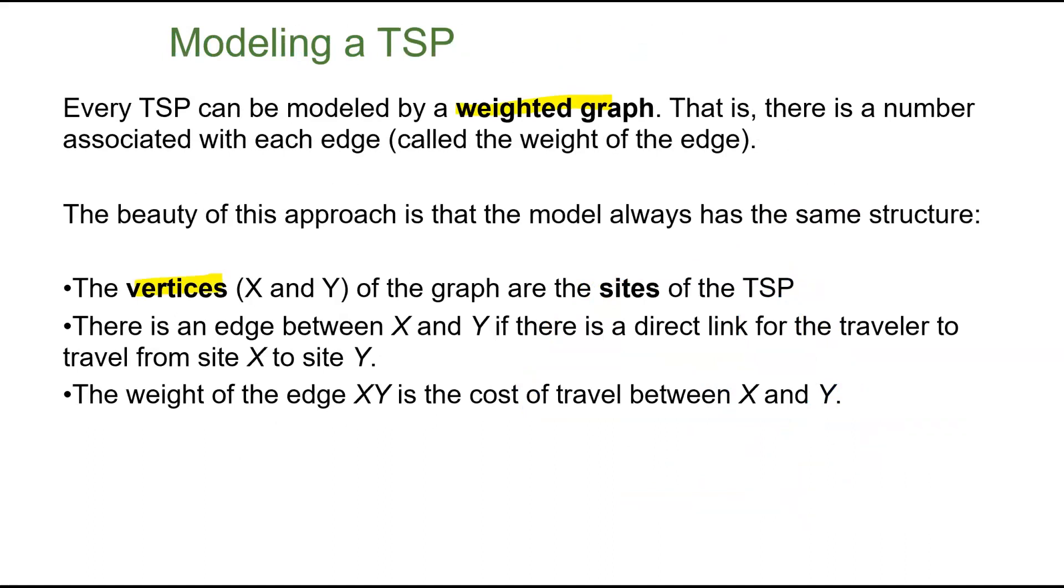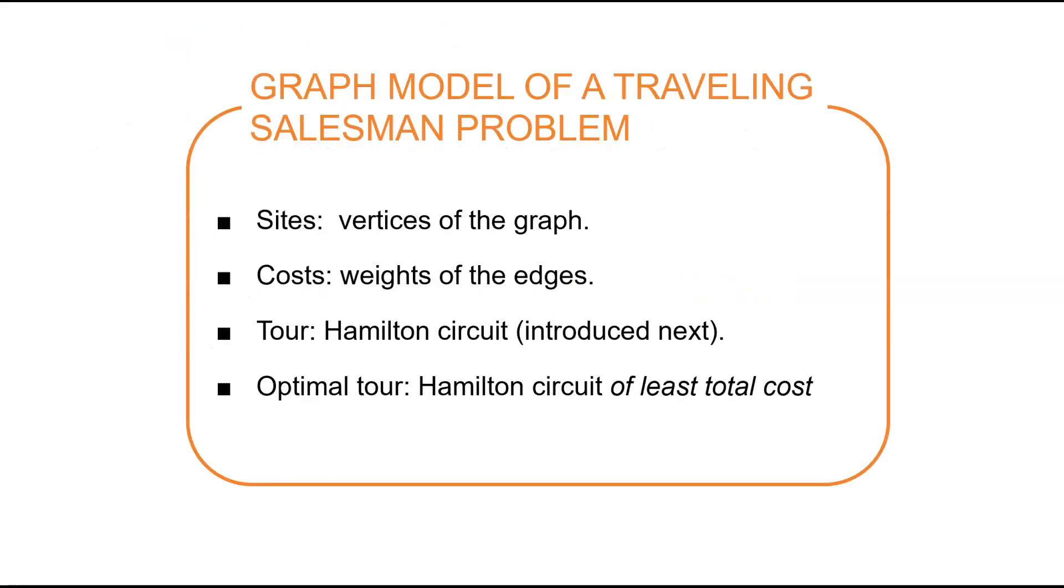And the vertices are the sites that you're visiting. So you guys are going to be making a traveling salesman problem for your project. So you're going to build a weighted graph and the vertices will be your sites. So, again, you're going to build this in your project. The sites where you're going to be visiting on your trip will be the vertices. The cost, you guys will decide what your cost is based on the project. And that'll be what you write on each edge. Now, the tour we'll get over next and the optimal tour soon.